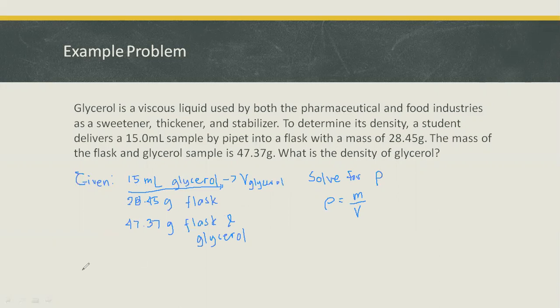Now, you must identify the mass of glycerol. To solve that, we have to subtract 47.37, the combined mass of flask and glycerol, with the mass of the flask. Therefore, the mass of glycerol is 18.92 grams.